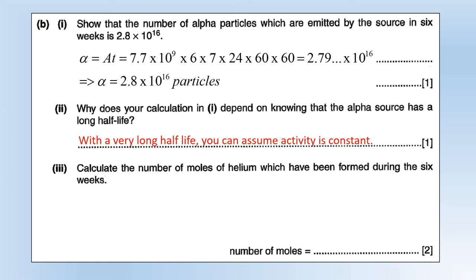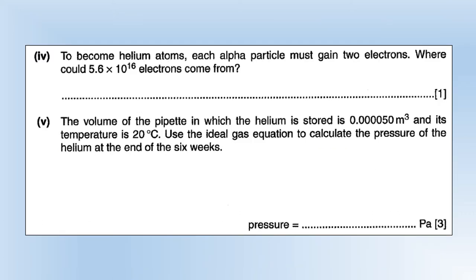Calculate the number of moles of helium which have been formed during the six weeks. We know how many particles have been formed, so if we divide by Avogadro's number that will work out the number of moles of helium: 4.6 times 10 to the minus 8. To become helium atoms, each alpha particle must gain two electrons. Where could 5.6 times 10 to the 16 electrons come from? The nucleus that emits the alpha particle still has electrons orbiting it, and even though it's emitted an alpha particle it's still got the same number of electrons, so that must mean the atom has developed a very big negative charge. The source that was emitting the radiation is going to be very negative and you can get electrons from there.